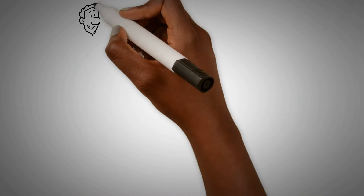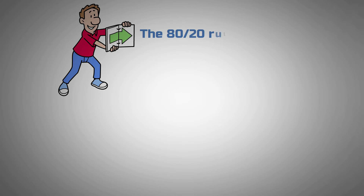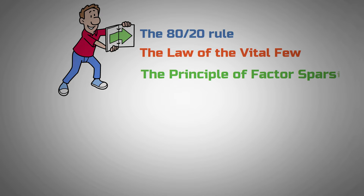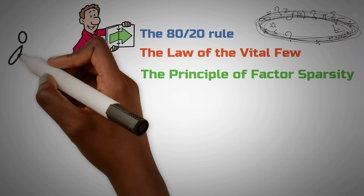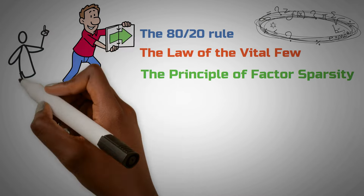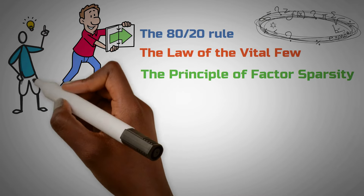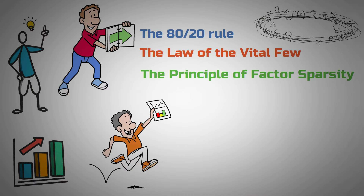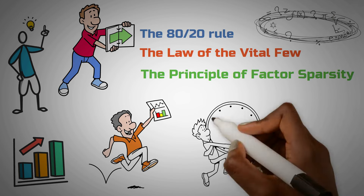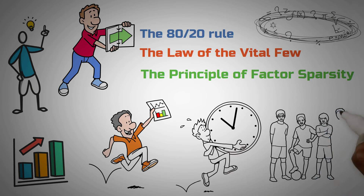This principle has different names, like the 80-20 rule, the law of the vital few, or the principle of factor sparsity. And while it's not a strict math equation, it's more of a common idea that we can see in many areas of life — from economics and business, to managing time, and even sports.